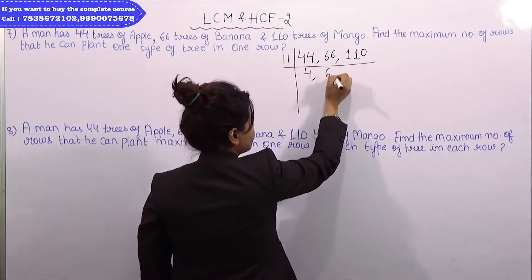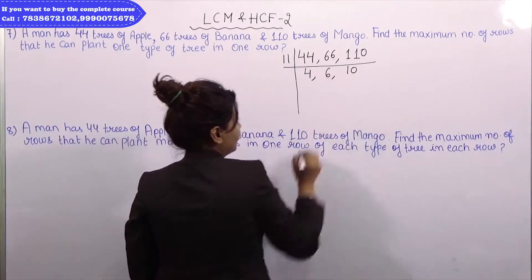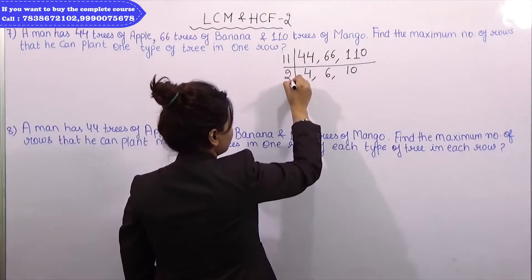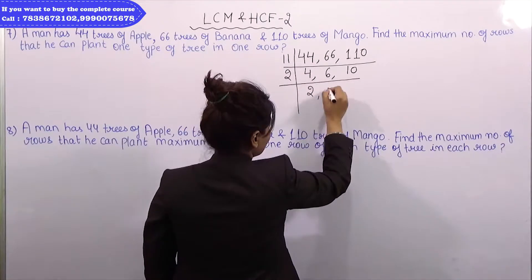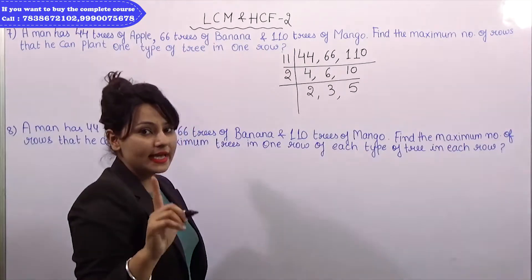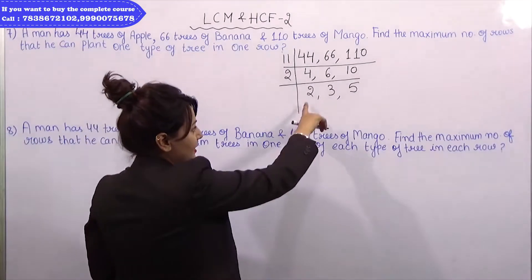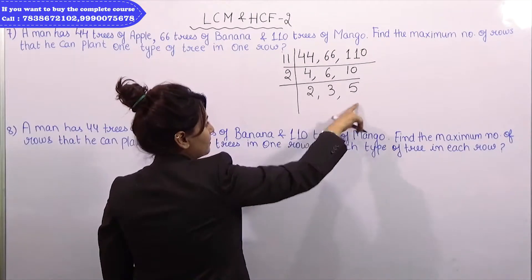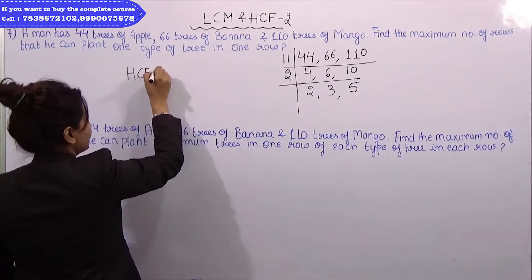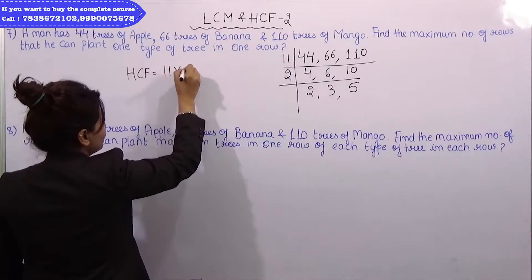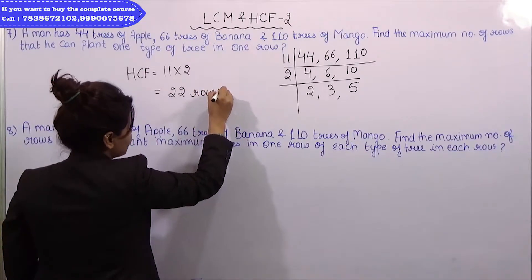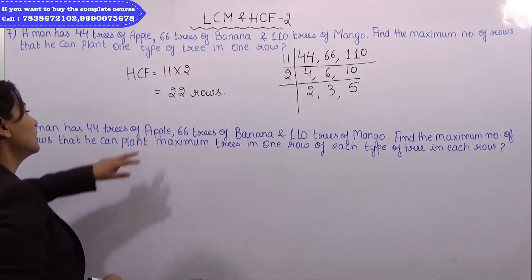This is 4, this is 6, this is 10. Now which number? This is 2, this will be 2, this will be 3, this will be 5. Now these 3 numbers will not divide from any number. So what is the HCF? 11 into 2. How much will our answer be? 22 rows.